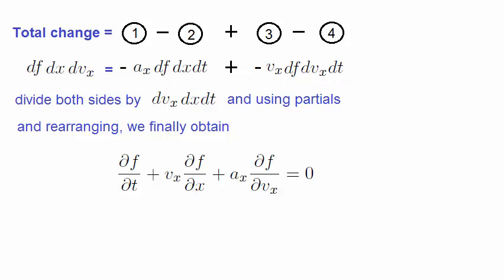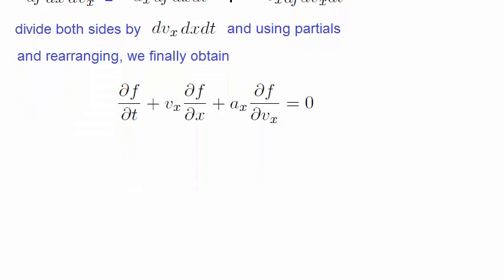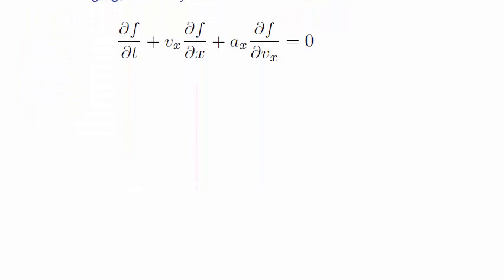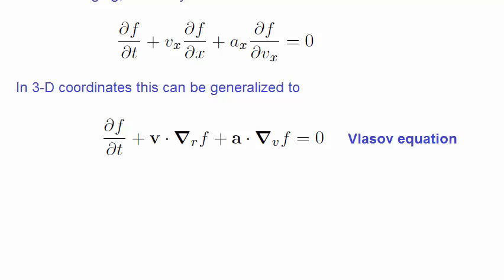Remember that this was for a two-dimensional phase space. But in reality, we have to deal with the full six dimensions. Extending this, in the three-dimensional coordinates for space and velocity, we have the following expression, which is known as the Vlasov equation, and is also known as the collisionless Boltzmann equation.